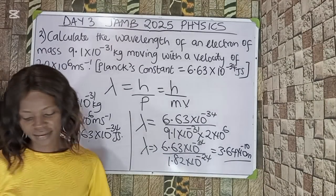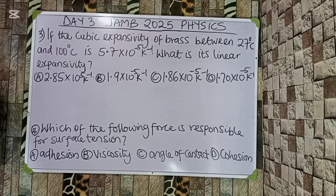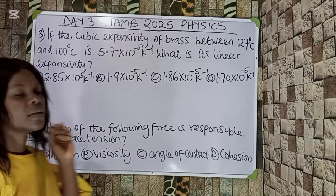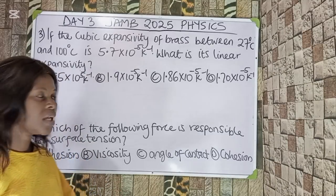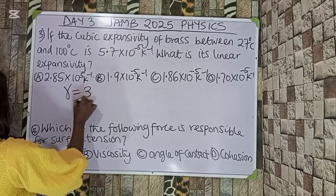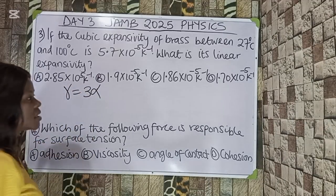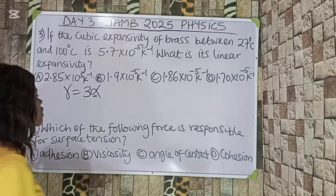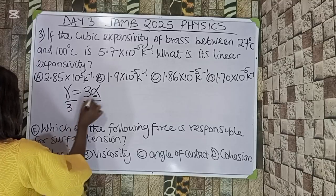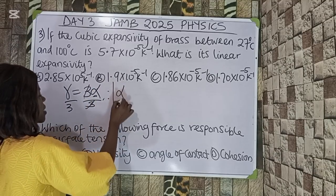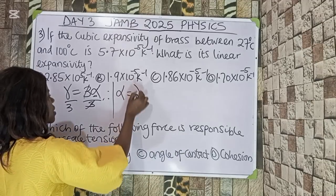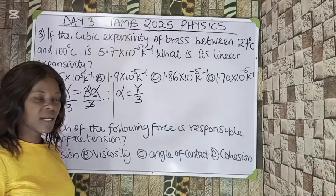Question 3. If the cubic expansivity of brass between 27°C and 100°C is 5.7×10⁻⁵ per Kelvin, what is its linear expansivity? To solve this, we need the relationship connecting cubic expansivity with linear expansivity. The relationship is γ = 3α. Since we are looking for the linear expansivity, divide both sides by 3, so α = γ/3.